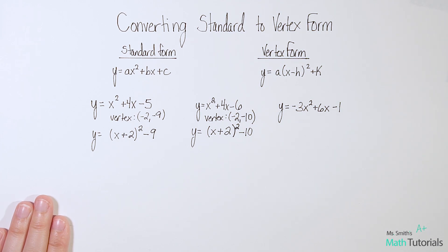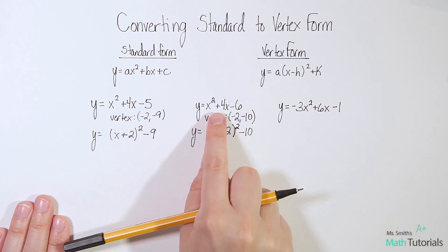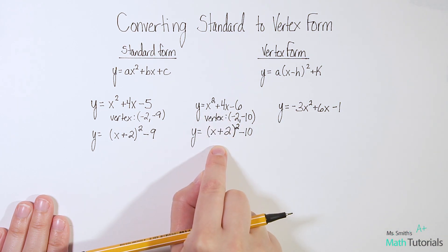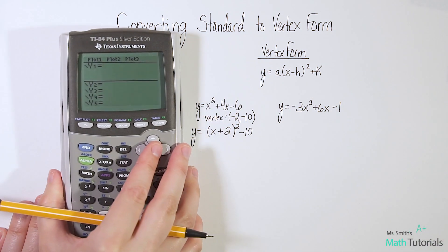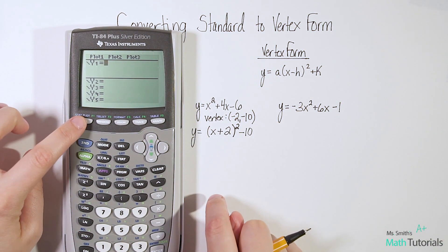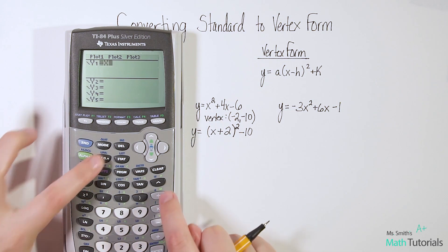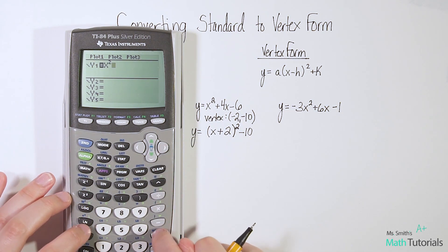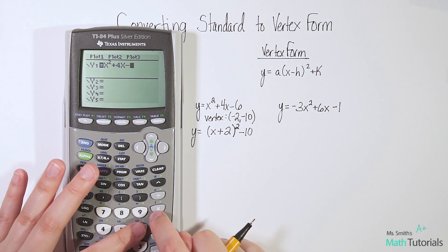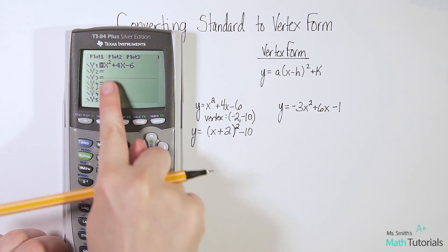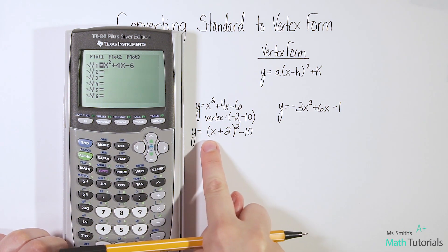As a quick check, and I should have shown this on number 1 too, we can quickly check ourselves to make sure we didn't make any kind of careless error by graphing these two equations, and they should be the exact same parabola. So let's just double check ourselves. I'm going to go to my y equals and type in x squared plus 4x minus 6. Go down to your second line and type in the vertex form.